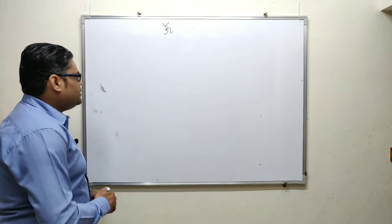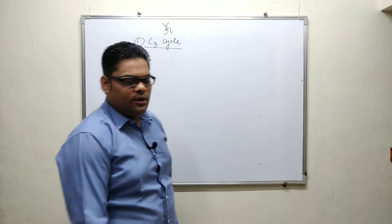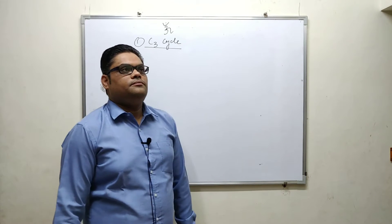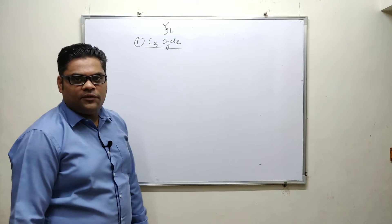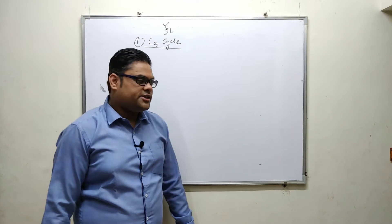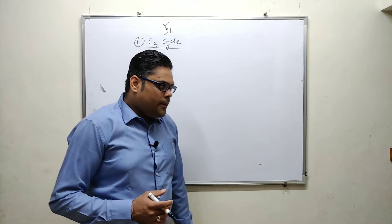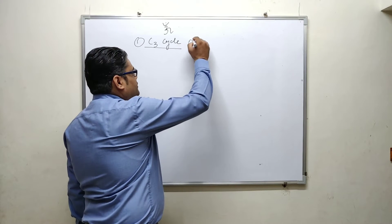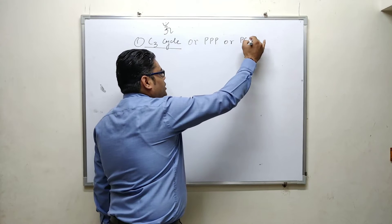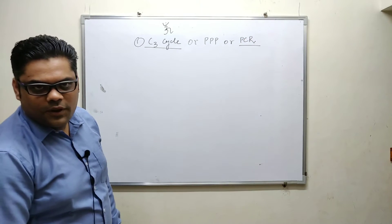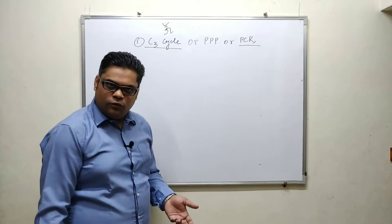Why is it known as the C3 cycle? This cycle was discovered by Calvin Benson in the year 1955, and he was later awarded the Nobel Prize for the same. It is also known as the Calvin-Benson cycle, the pentose phosphate pathway (PPP), and the photosynthetic carbon reduction cycle (PCR). All these names can get you confused.